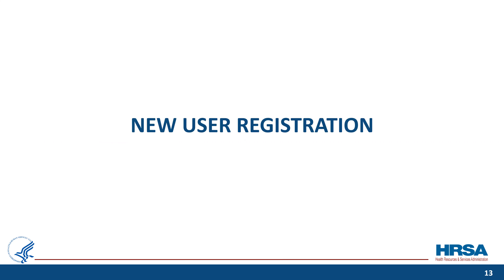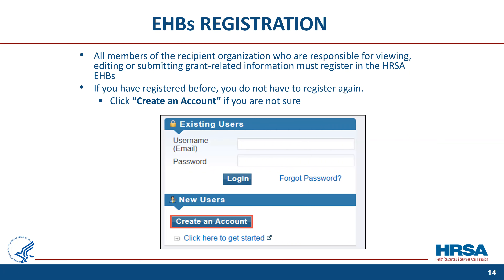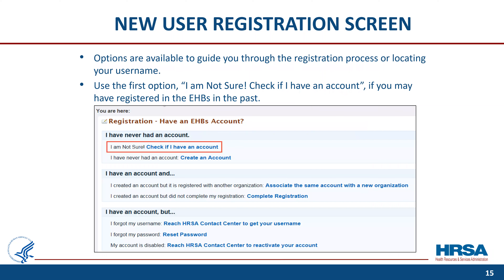Now I will provide an overview of the registration process for new users. All members of the recipient organization who are responsible for viewing, editing, or submitting grant-related information must register in the HRSA EHBs. If you have previously created an EHBs account, you do not have to register again. If you are not sure if you have previously registered, click the Create an Account button on the login screen, shown here outlined in red.